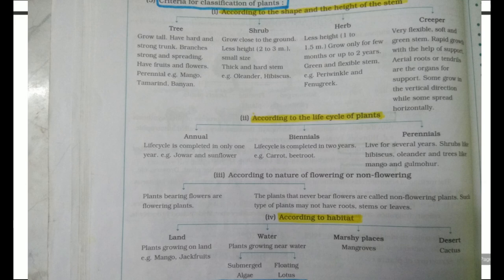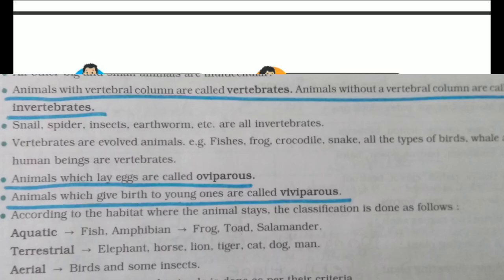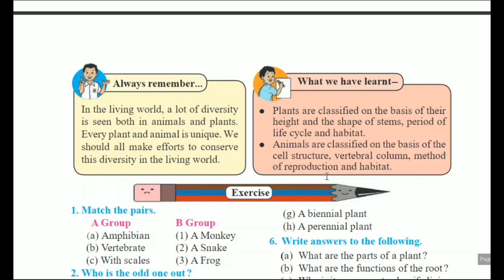What we have learned: plants are classified on the basis of height and shape of stems, period of life cycle, and habitat. Animals are classified on the basis of cell structure, vertebral column, method of reproduction, and habitat. In this lesson we discussed the classification of plants and animals using different criteria.